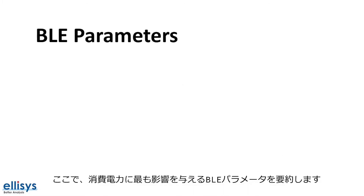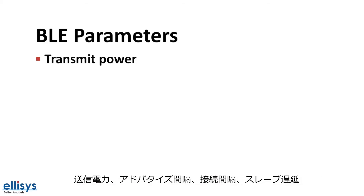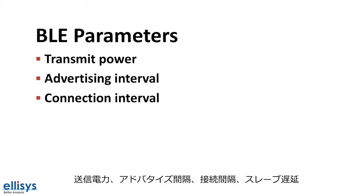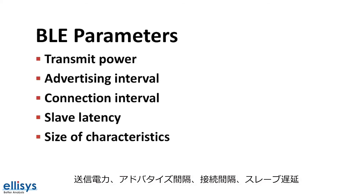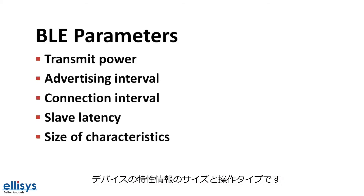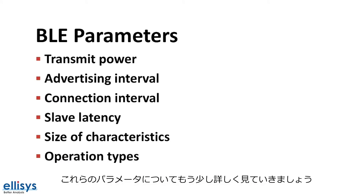To summarize, here are the BLE parameters that affect power consumption the most: first, transmit power; then the advertising interval; the connection interval; slave latency; size of characteristics; and the operation types. Let's go into each of these in a little bit more detail.